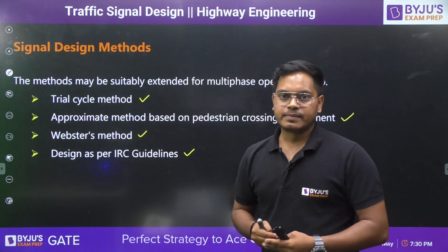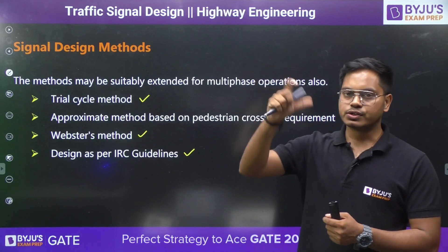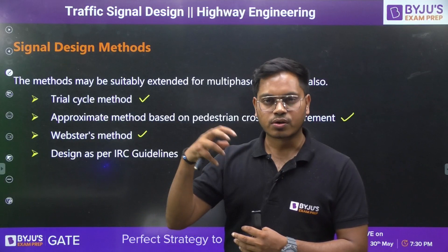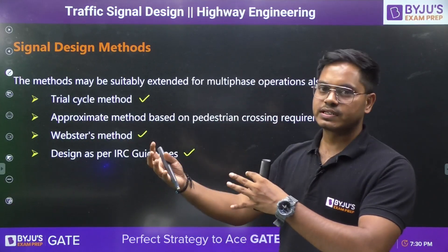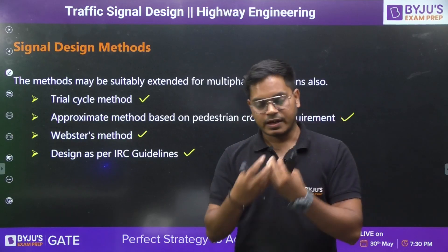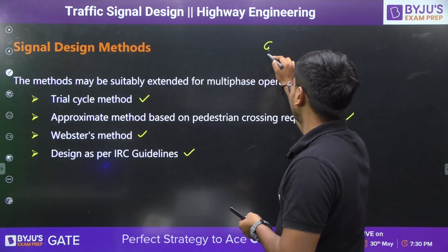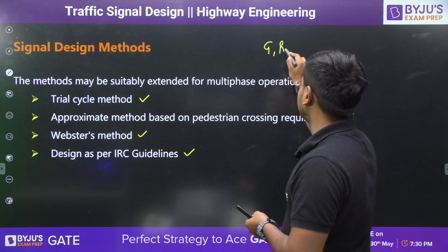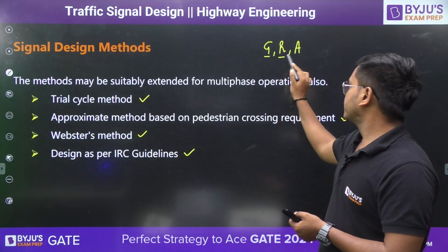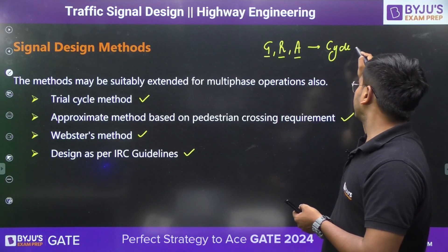The first is the trial cycle method. This method basically works on the iteration method. Here, you need to assume one cycle length, then based on that, you assume a 15-minute traffic count and all those things, and based on that, you eventually get the traffic signal design. When I say design of traffic signal, I mean we have to design for how much time the green light should turn on, how much time the red light should turn on, and how much time the amber light should turn on. If I know the duration of all three, I know the cycle length — and that's what I want to design.